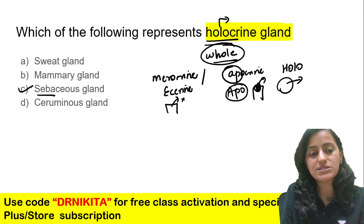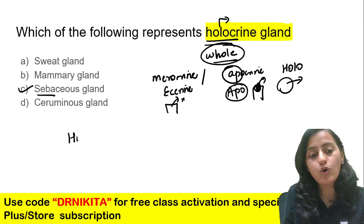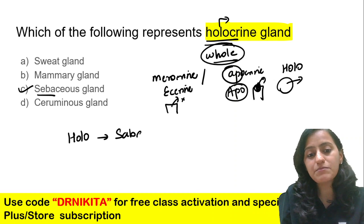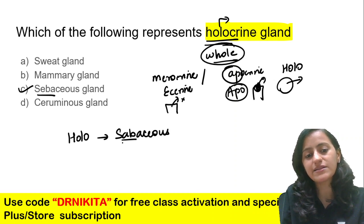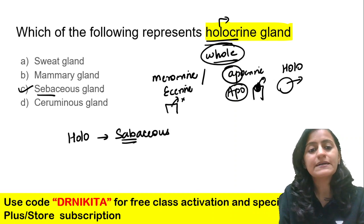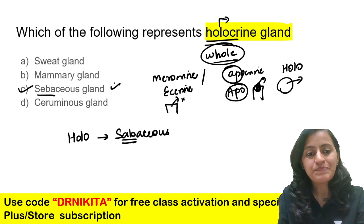Remember the sebaceous gland. You can remember this as: holo means everything — matlab sub — and sub means sebaceous gland. So the sebaceous gland is a holocrine gland.